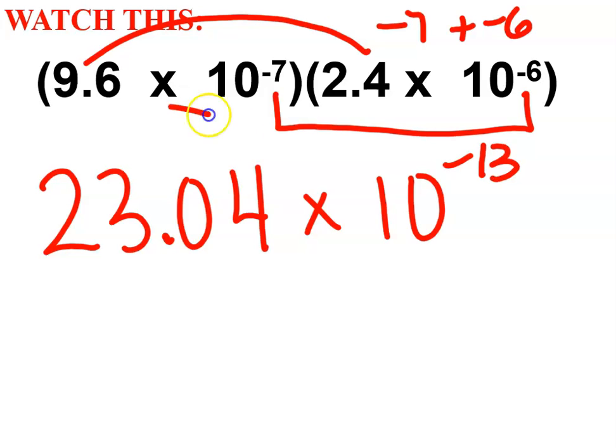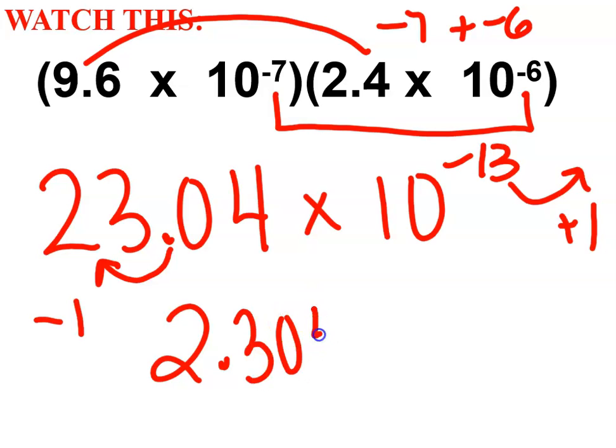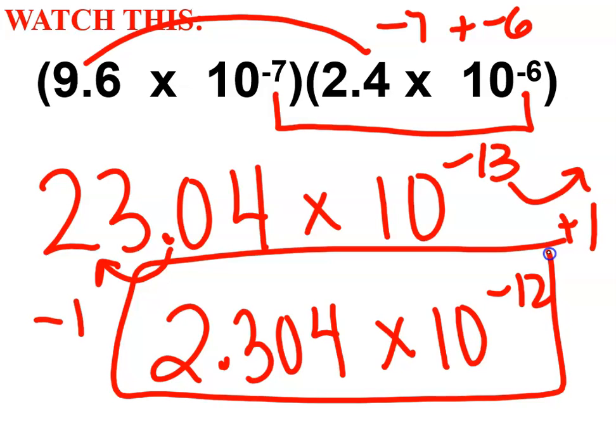Now again, this decimal point is not allowed to be after the 3. 23 is too big. Move the decimal one place lower. Move the exponent one place higher. My final answer is 2.304 times 10 to the negative 12. Use your calculator to help you compute that math.